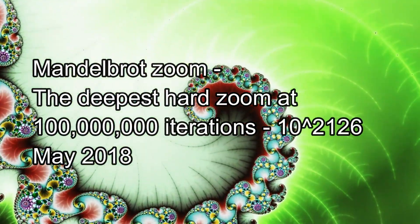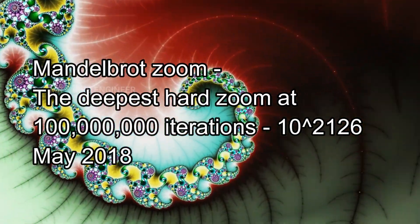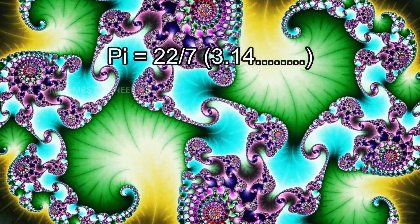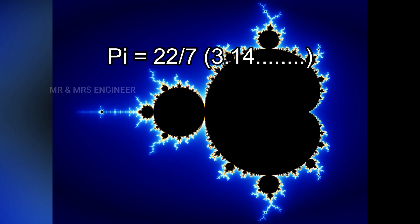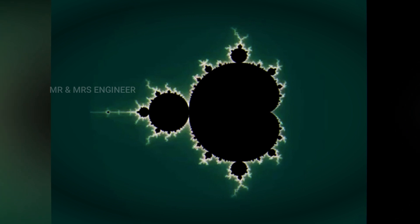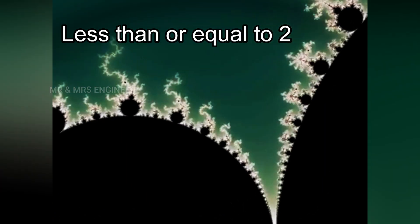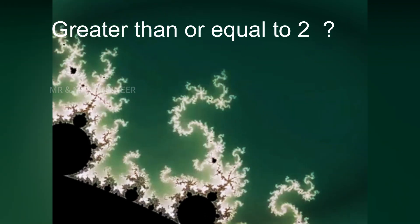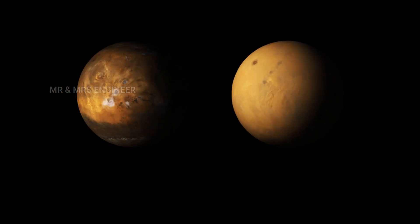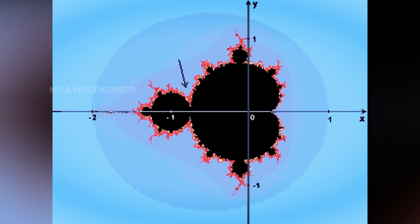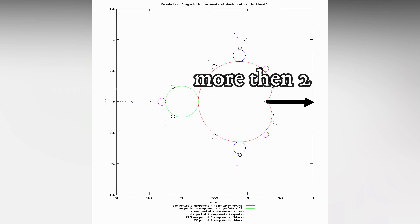The deepest Mandelbrot Fractal Zoom can add a number that looks like this. You can find the number on the screen. All of this is the first view of the window. 22 by 7, 3.14 and even the view. The model brot set is more than 2, there is less than or equal to 2. There is no value in this model.